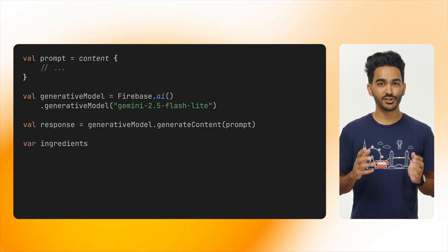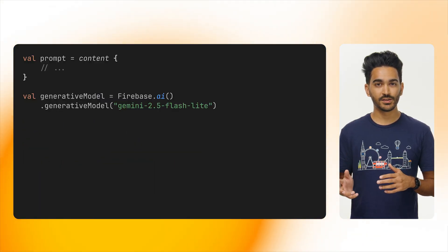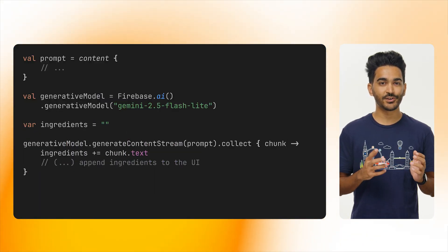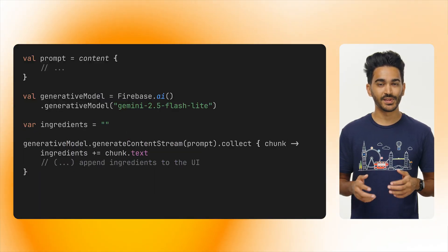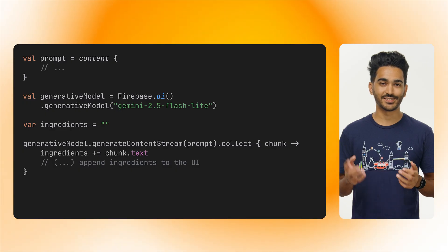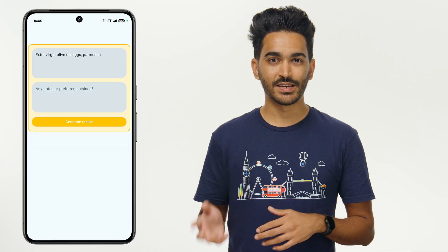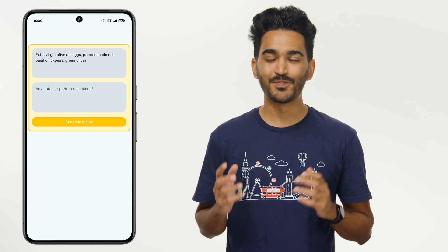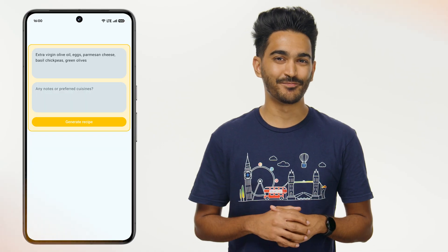To do that, instead of calling GenerateContent, we call GenerateContentStream and display the results in the UI as they arrive. And here's what it looks like in the app. Much better.